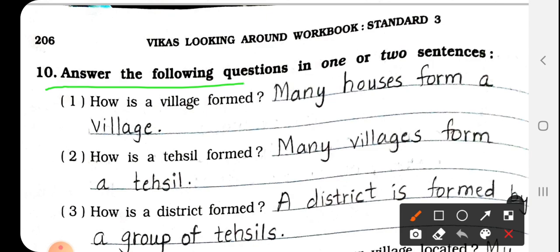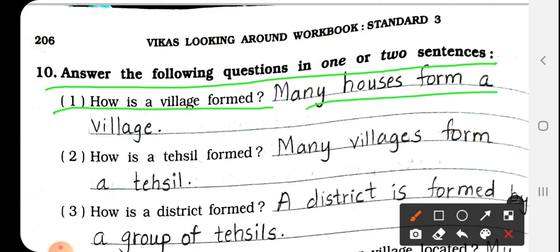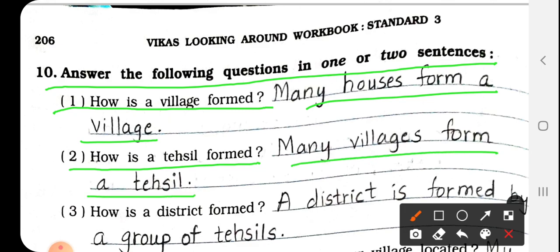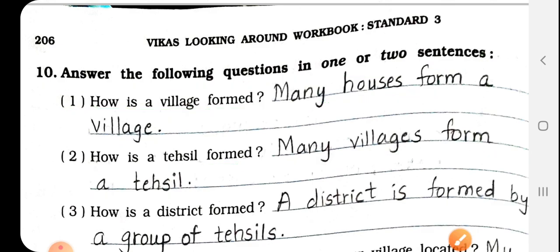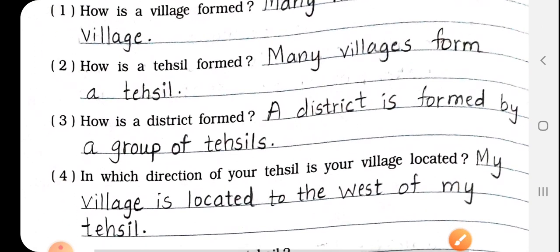Answer the following questions in one or two sentences. Number 1: How is a village formed? Many houses form a village — many houses milkar village banta hai. How is a tehsil formed? Many villages form a tehsil — many villages milkar tehsil banta hai.